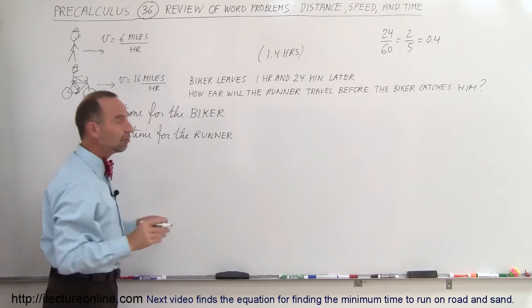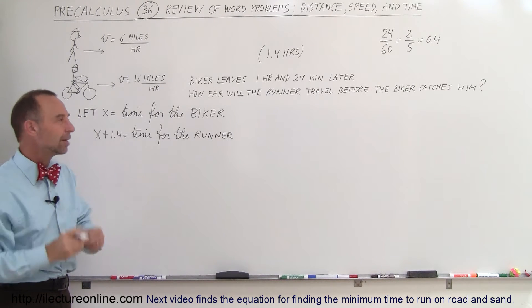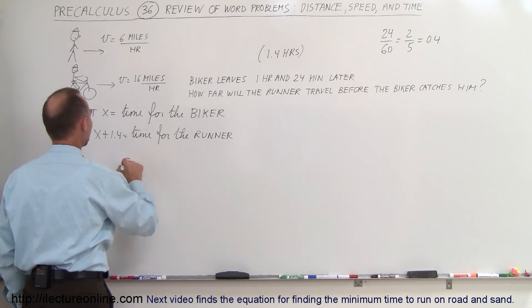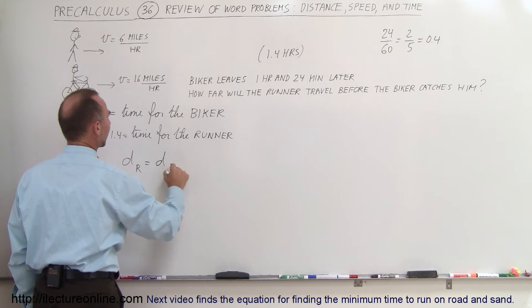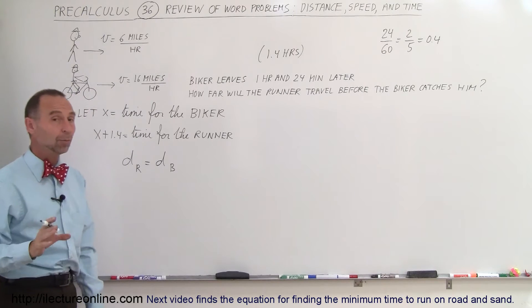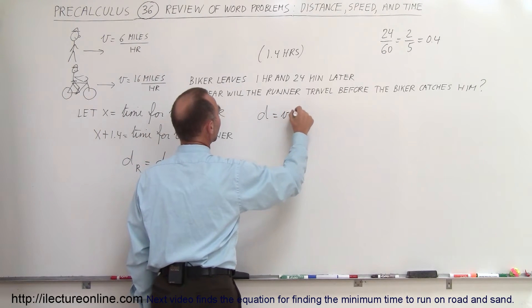Okay, now the principle here is that when the biker finally catches the runner, they will have covered the same amount of distance. So the distance covered by the runner must equal the distance covered by the biker. And that's how we're going to work out this problem. And then of course you have to realize that distance equals velocity times time.